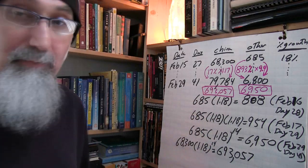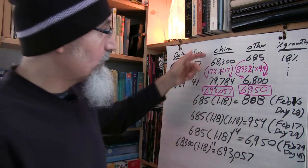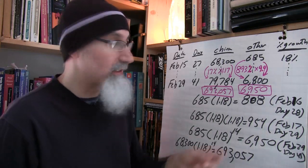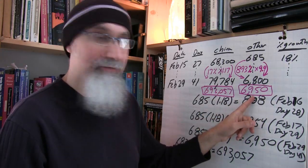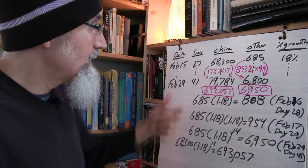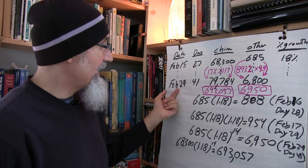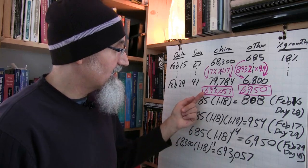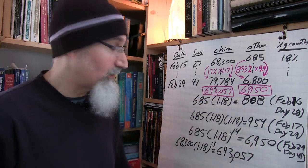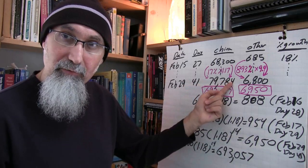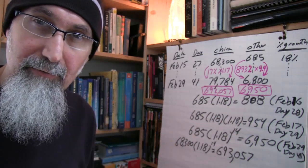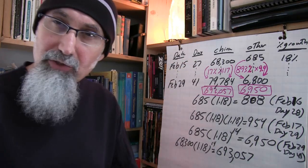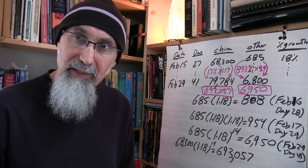What does this number mean? It means if the growth per day inside China was consistent with the growth per day of confirmed cases we're seeing outside of China — averaging 18% per day — then the number of cases on February 29th would not be 79,784, but would be 693,057. So it wouldn't be 80,000 if we're rounding — it would be 700,000.